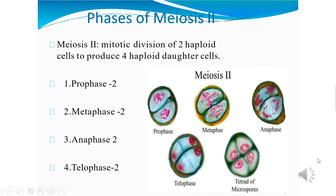Meiosis 2 is going to form 2 haploid cells from 2 daughter cells. It consists of 4 stages: prophase 2, metaphase 2, anaphase 2, and telophase 2.